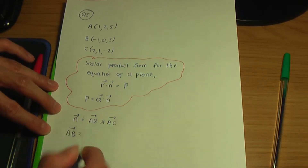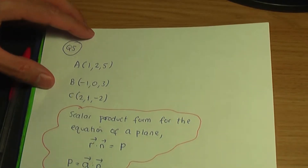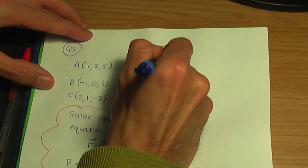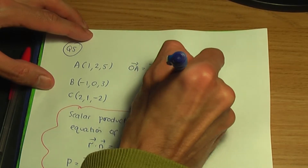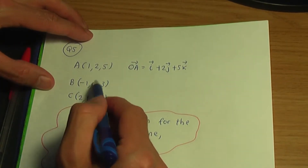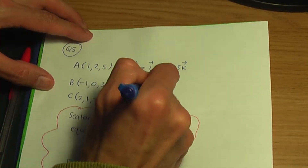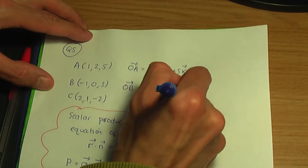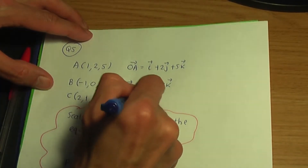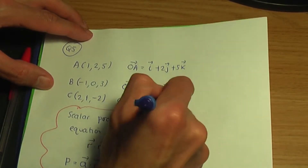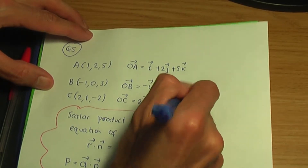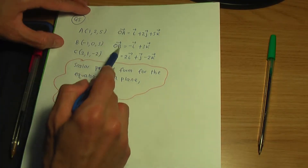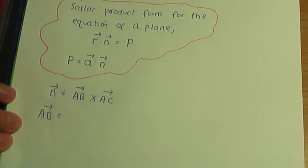First things first, we need vectors AB and AC. We have A, B, and C in coordinate form, so let's convert them as vectors. The vector OA will be i + 2j + 5k. Vector OB will be −i + 0j + 3k. Vector OC will be 2i + j − 2k. I've converted the coordinates for A, B, and C into vector form, giving me OA, OB, and OC, which I need to work out vectors AB and AC.